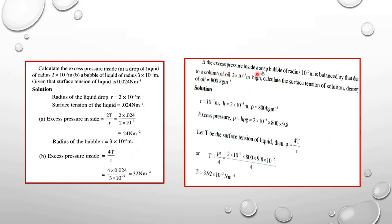Second question: excess pressure inside a soap bubble of radius 10⁻² meter is balanced by that due to a column of oil 2 × 10⁻³ meter high. Calculate the surface tension of the solution. Density of oil equals 800 kg/m³.